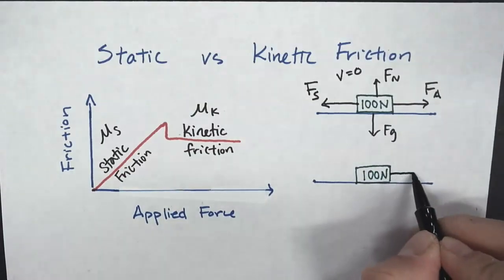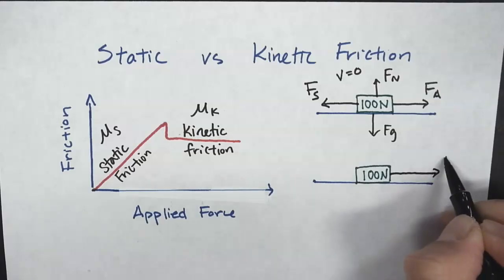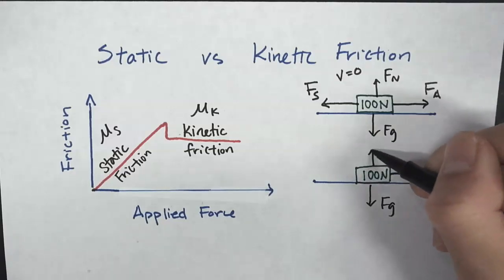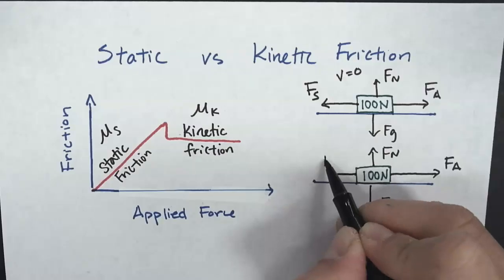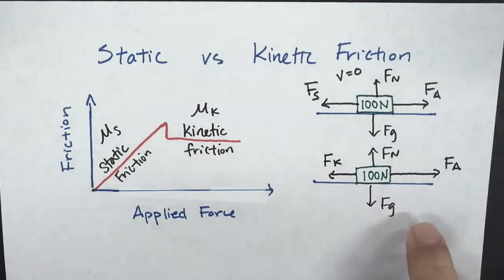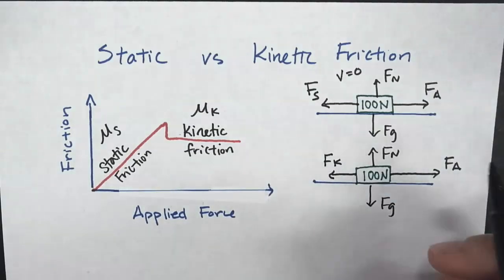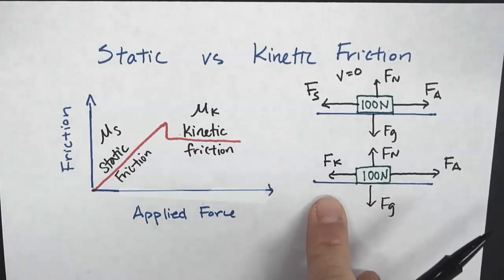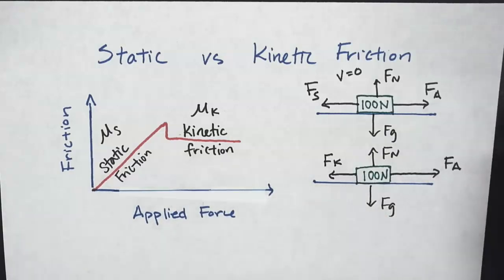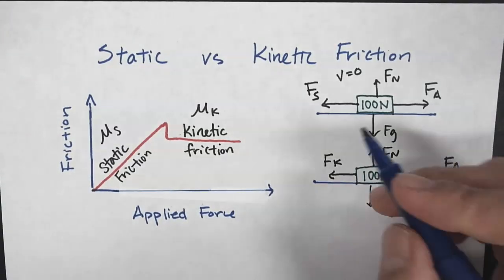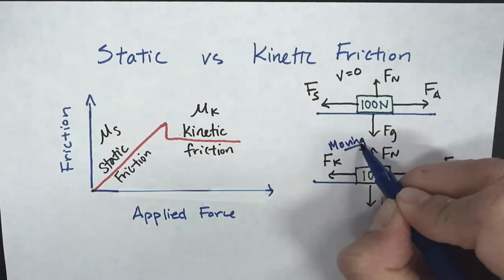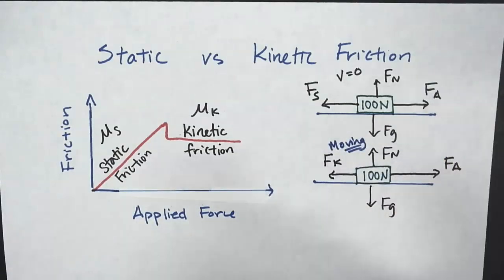If you push it with enough force, now we have a greater force. We have F_G, F_N, and to the left this is going to be F_K because it is moving. Once it starts moving, the kinetic friction is going to be constant, and we can calculate that. So this situation is moving, while the previous one was at rest.